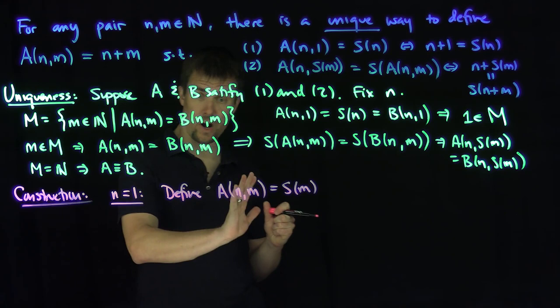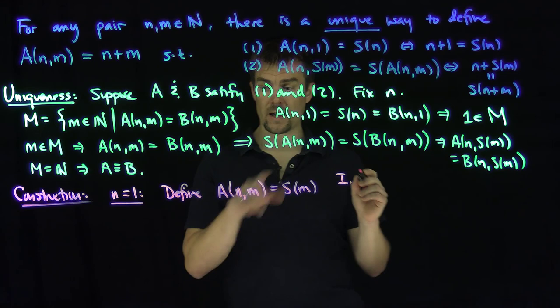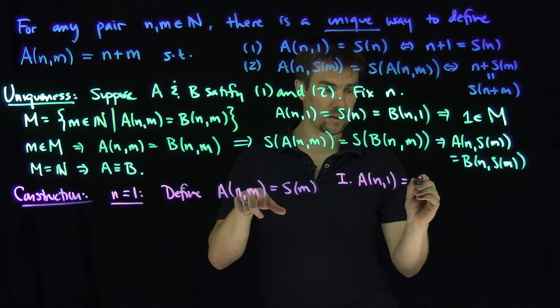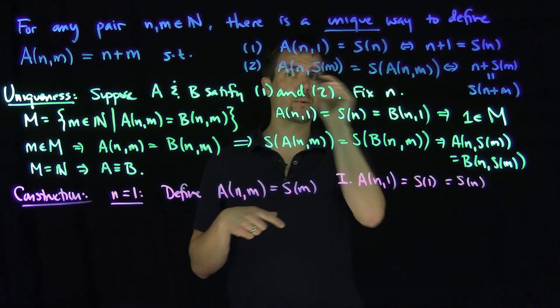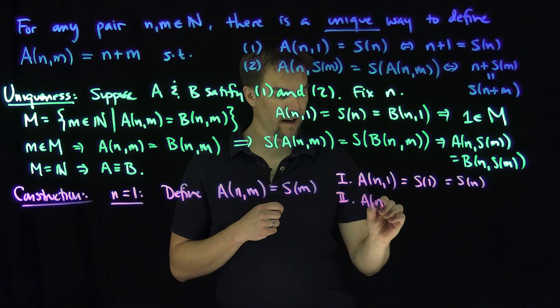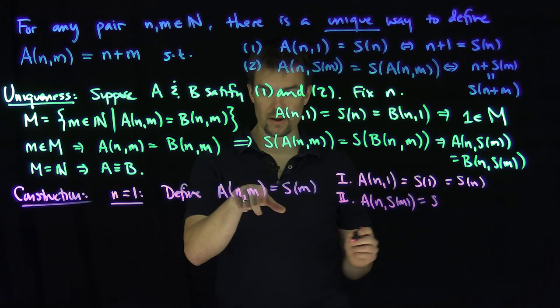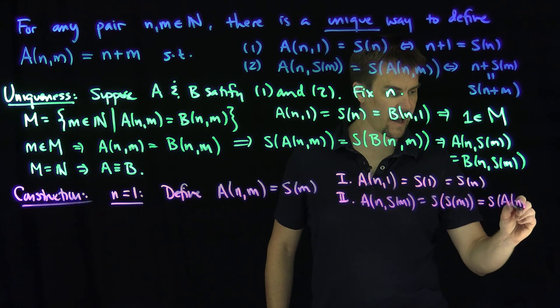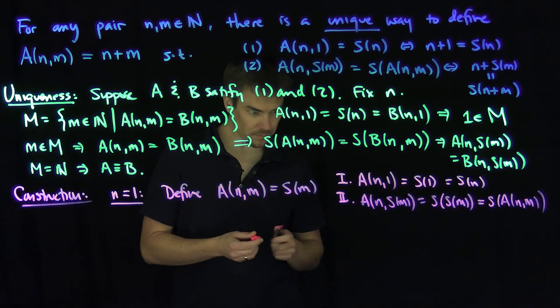Let's check that this satisfies both properties. For property one, A(n,1) is the successor of 1, and since n equals 1, this is the successor of n — property one is satisfied. For property two, A(n,S(m)) is by definition the successor of S(m). But S(m) equals A(n,m) by definition, so this is the successor of A(n,m) — property two is satisfied. So we've shown it's possible to define this operation when n equals 1.